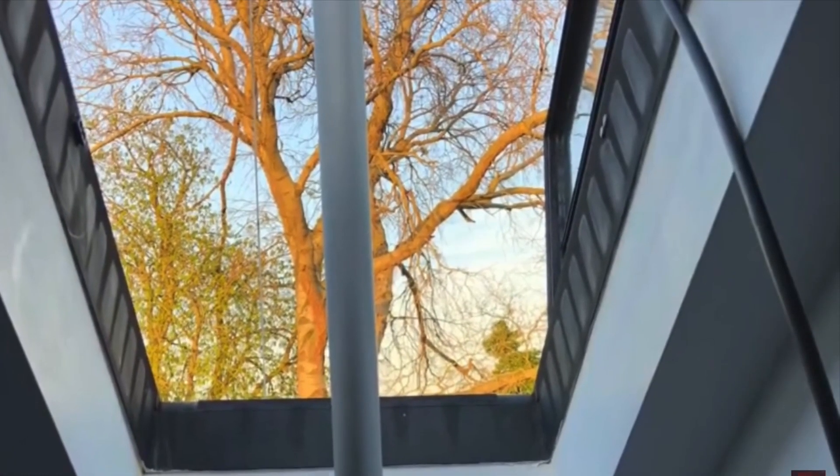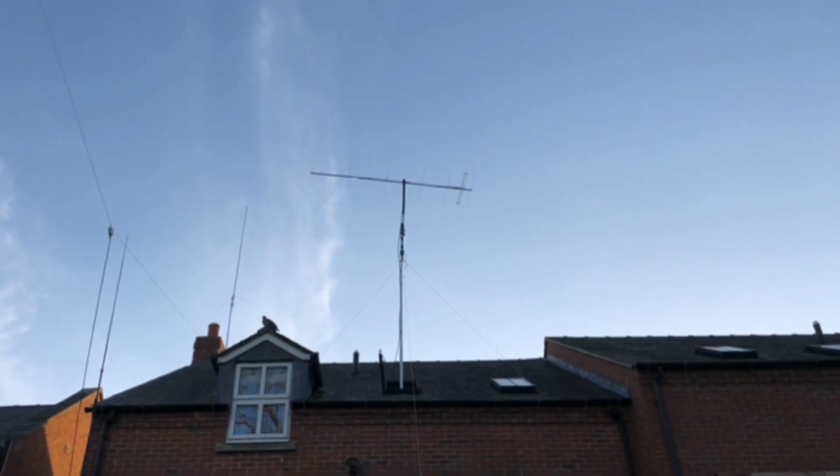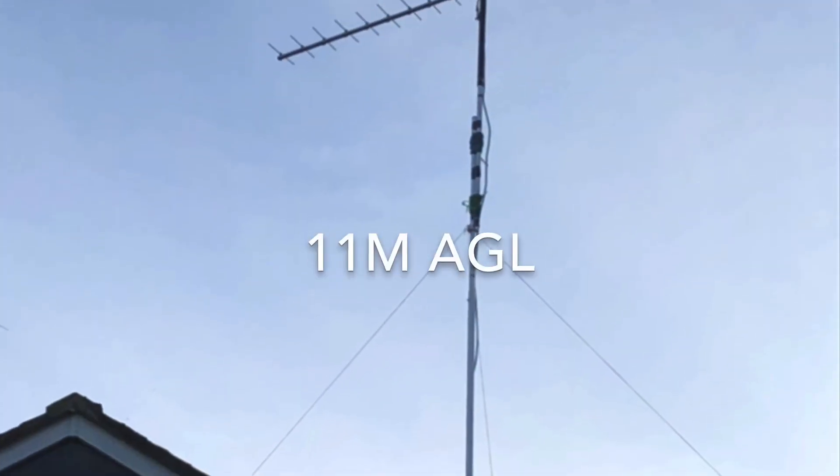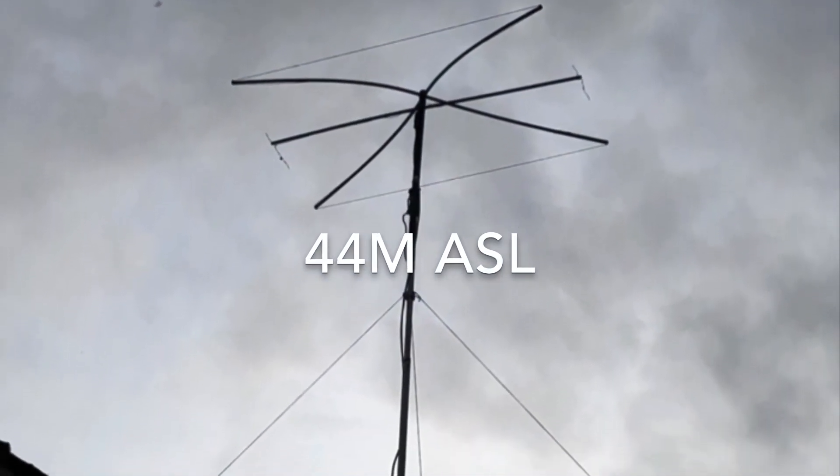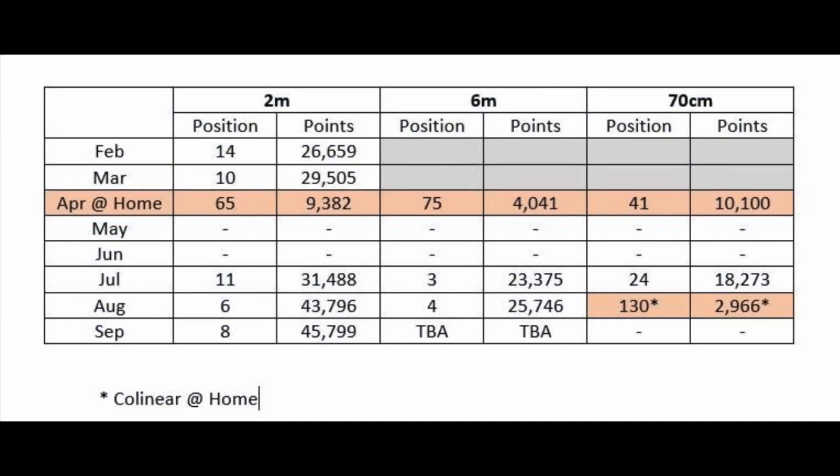So in this scenario the antennas are actually higher above the ground and also above the roofline of the house at around 11 meters but my house is only 44 meters above sea level. The equipment in both setups is the same. So you can see from these comparison results what a difference working portable and getting both out in the clear and up I can achieve. I've highlighted April the month I work from home and for each of the bands you can see the position and the points I achieved. The grey represents I wasn't contesting at that point in that band and the hyphens represent missed months.